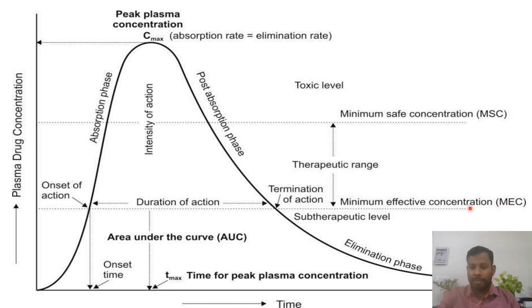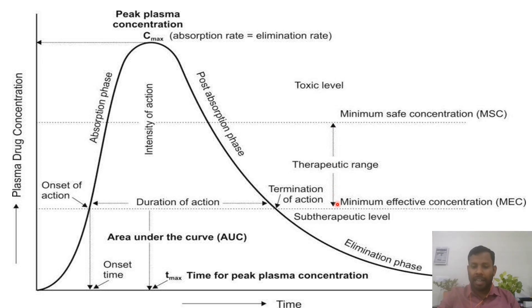We are having eight pharmacodynamic parameters: MEC, minimum effective concentration; then second, MSC — here this is maximum safe concentration; then onset of action, onset time, duration of action, intensity of action, therapeutic range, and then the last one, therapeutic index. One by one, we will discuss.